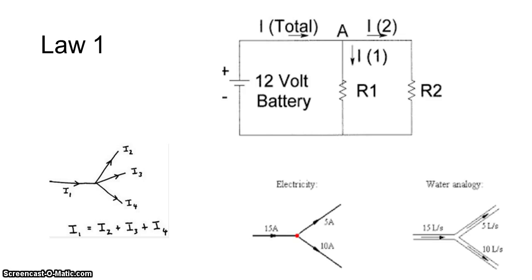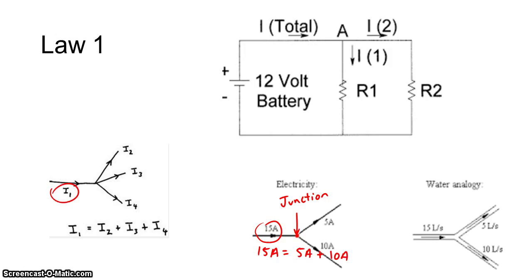The first law: when a current splits into two directions, that's called a junction. The current into a junction is equal to the current out of a junction. So, 15 amps is equal to 5 amps plus 10 amps. In terms of symbols, I1 is going to be equal to I2 plus I3 plus I4.